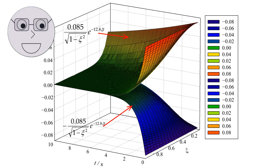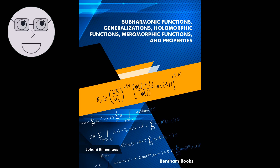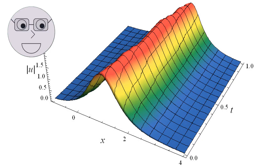To construct a Riemann surface, we start with a complex plane or sphere and then identify points on the surface that are related by a specific function. This function is known as the transition function, and it defines how the different parts of the surface are glued together. The transition function must satisfy certain conditions to ensure that the resulting surface is a Riemann surface, including being holomorphic, which means that the function is differentiable and has no singularities. There are several ways to construct Riemann surfaces, including the algebraic method, the geometric method, and the uniformization method. Each method has its own advantages and disadvantages, and the choice of method depends on the specific problem being studied.